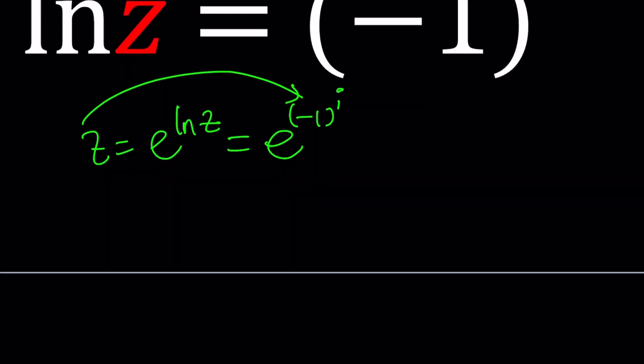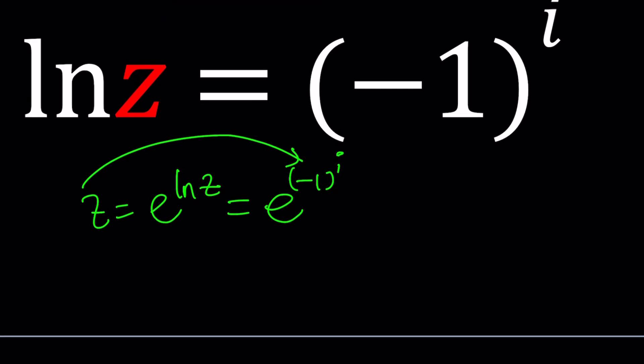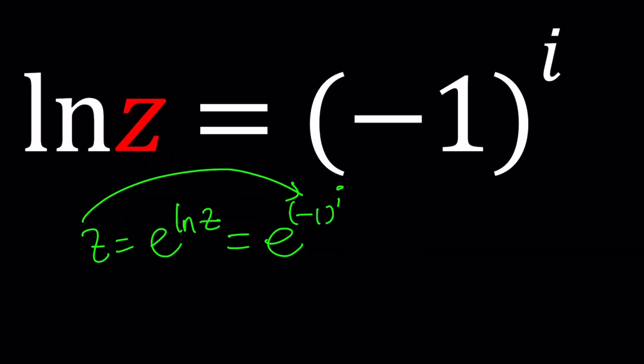Originally, it would be something like, can you evaluate negative 1 to the power i? But that would not be very interesting. That's why I wanted to spice it up a little bit by including the natural log. So let's see how we can proceed with a problem like this.